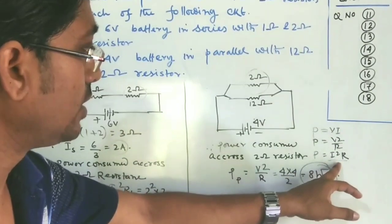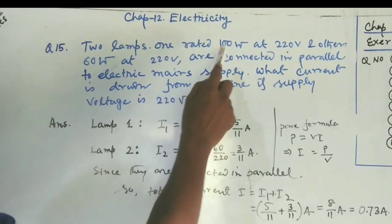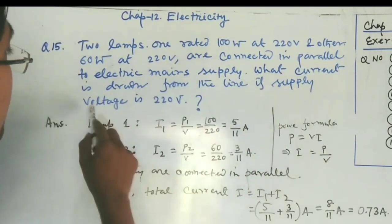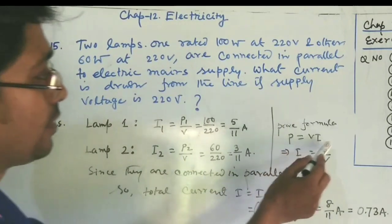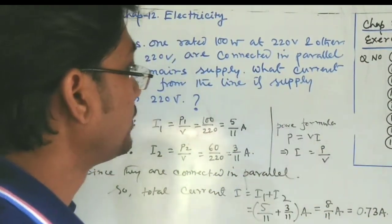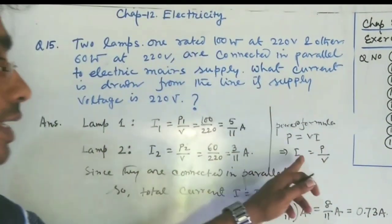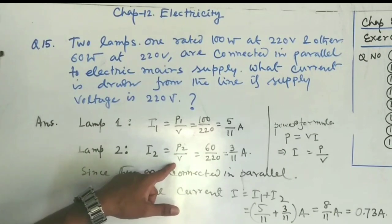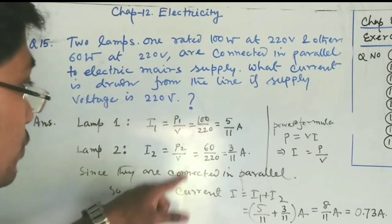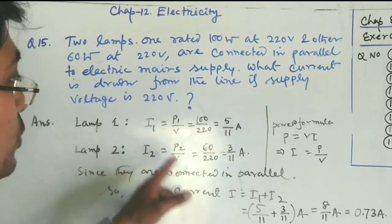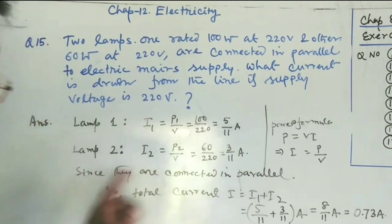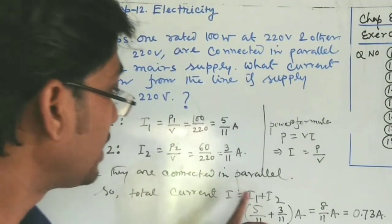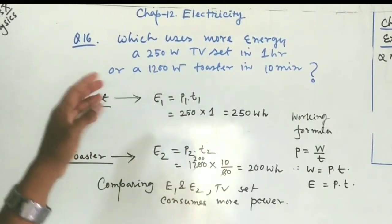Question 15: Two lamps rated 100 watt at 220 volt and 60 watt at 220 volt are connected in parallel. Current for lamp 1: I1 = P1/V = 100/220 = 5/11 ampere. Current for lamp 2: I2 = P2/V = 60/220 = 3/11 ampere. Since they are in parallel, total current I = I1 + I2 = 5/11 + 3/11 = 0.73 ampere.